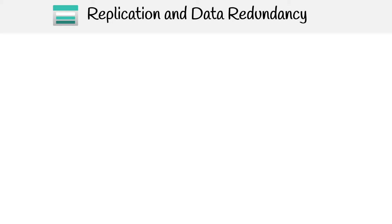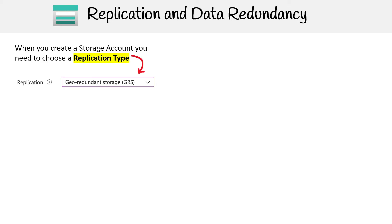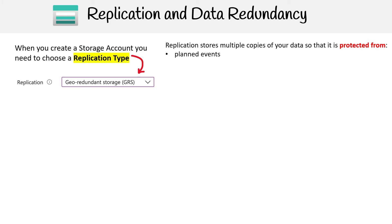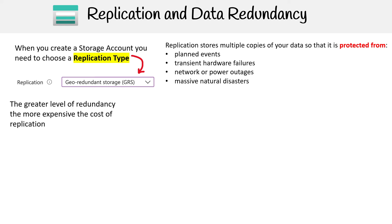Let's take a look at replication and data redundancy. When you create a storage account, you're going to have to choose a replication type. The reason why is that you're going to want to have multiple copies of your data so you're protected from things like a planned data center outage, hardware failure, network or power outage, or natural disaster. That is the whole point of replication, and the greater the level of redundancy, the more expensive the cost of replication will be.